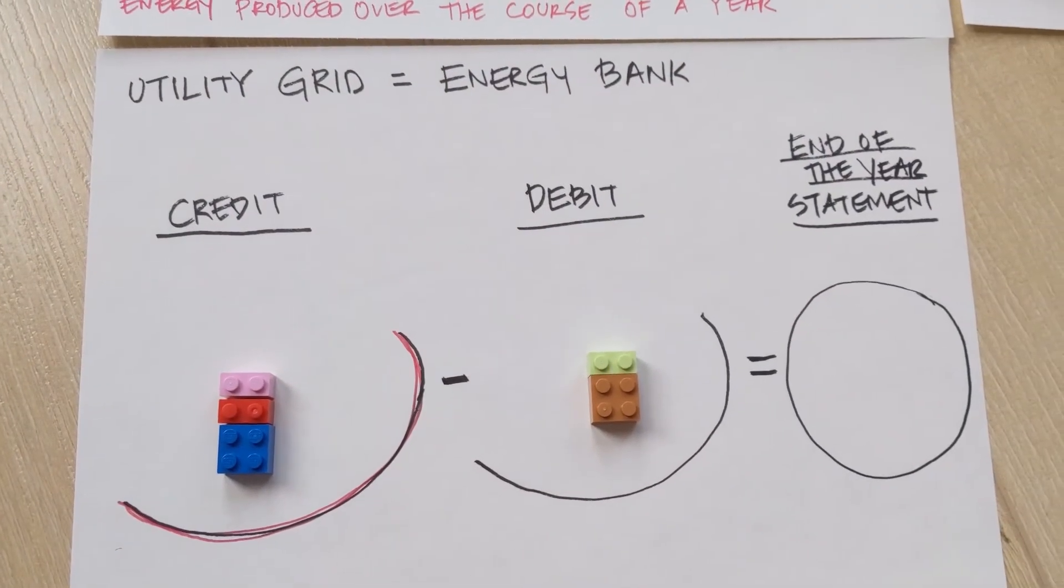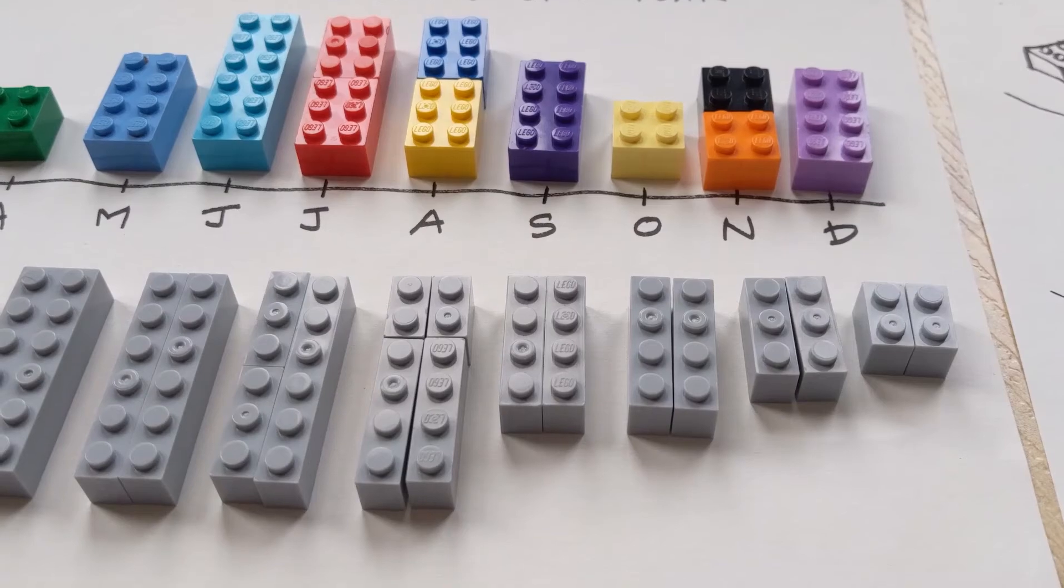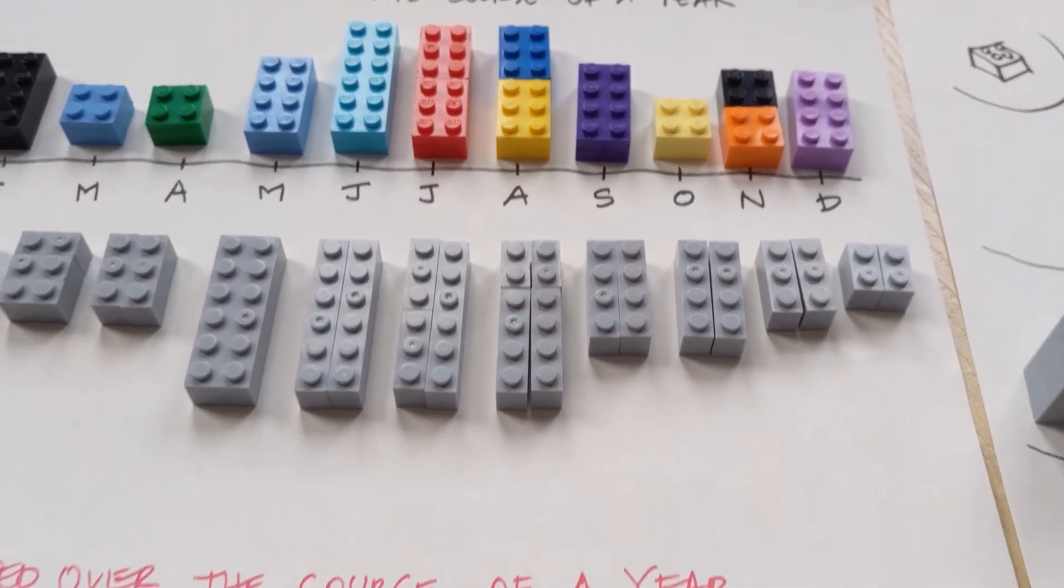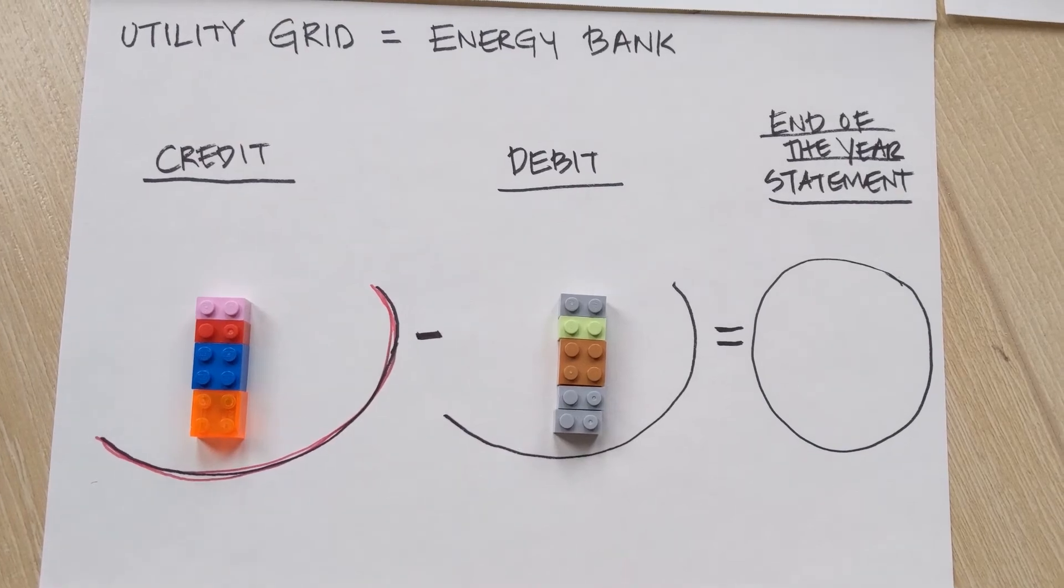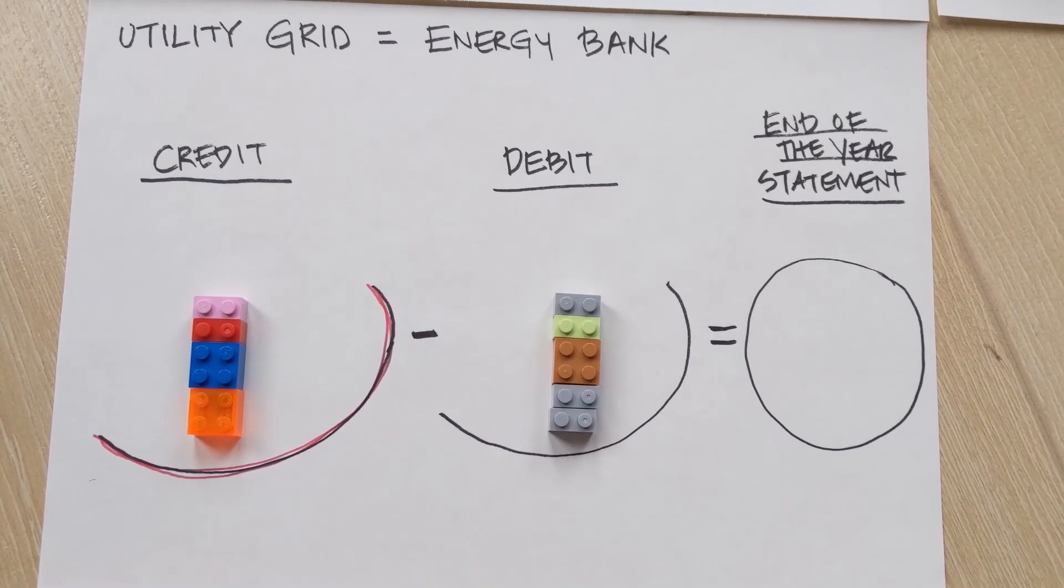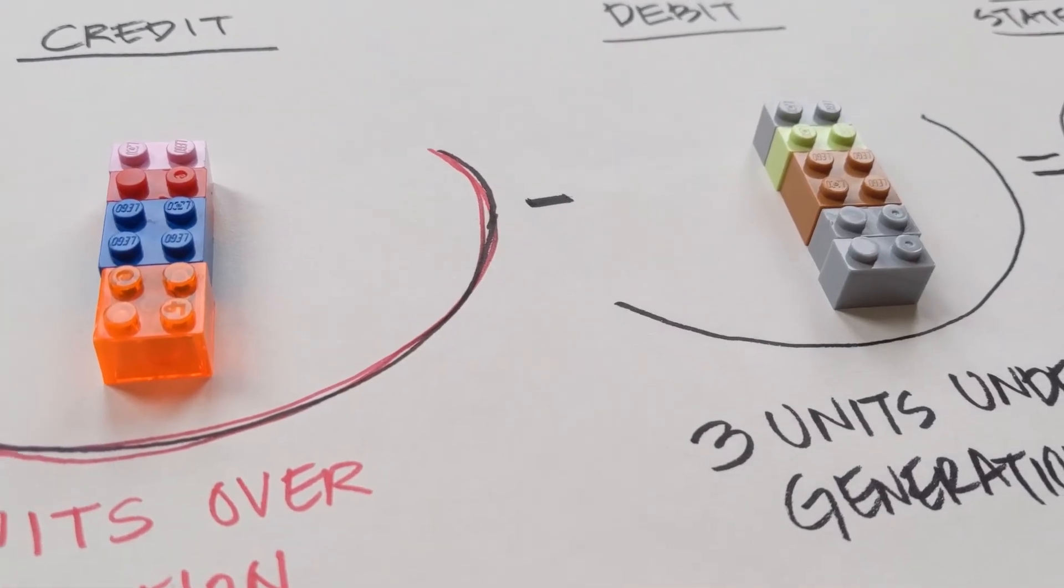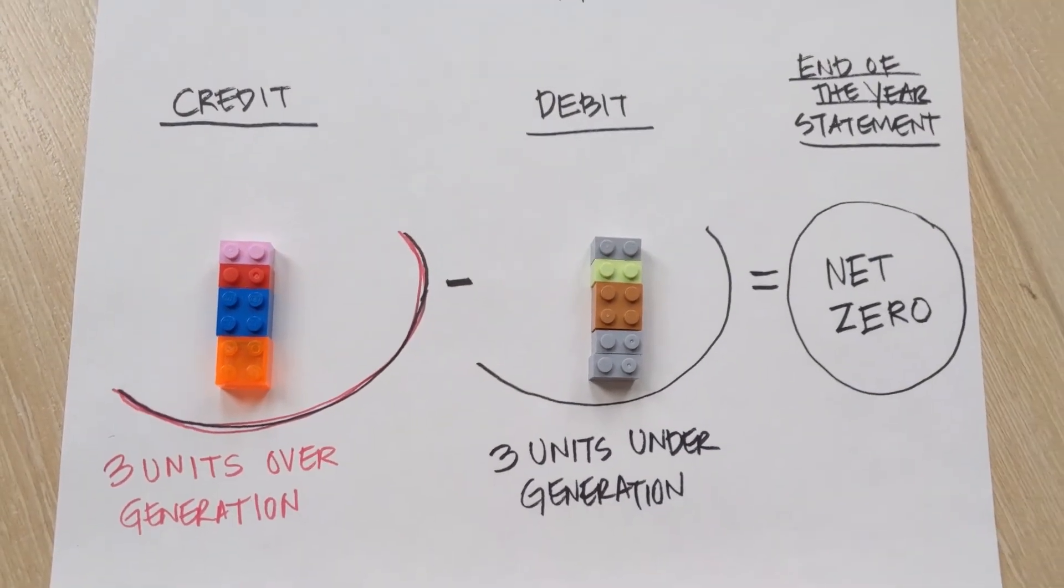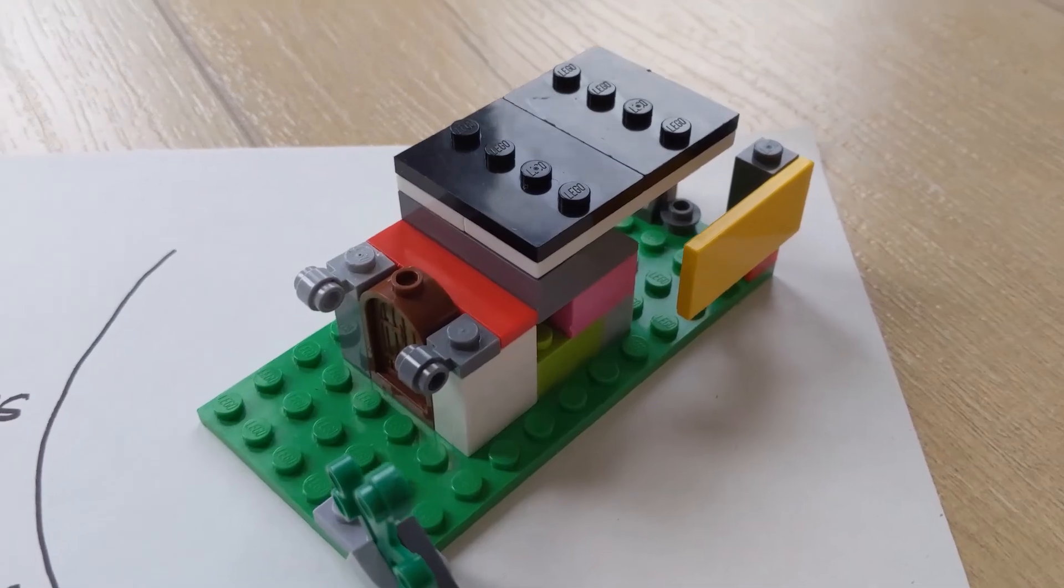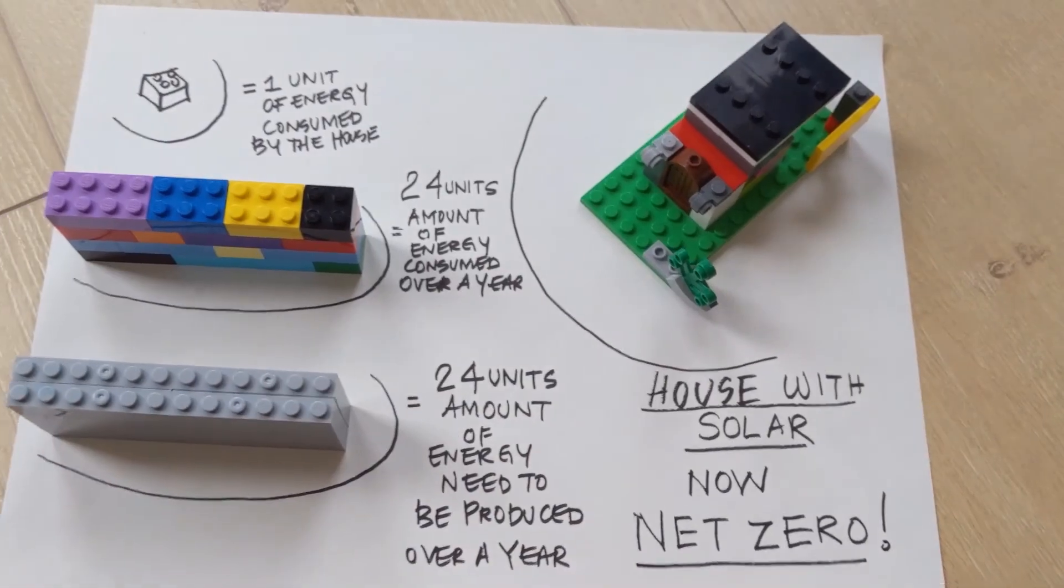At the end of the year, when you total the amount of energy we borrowed from the grid and the amount of energy we gave back to the grid, if it is equal to zero. So, now we have a house with solar panels.